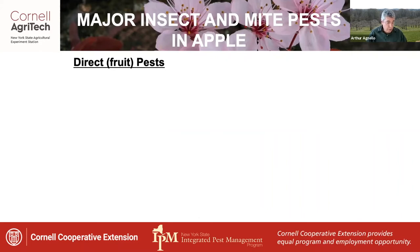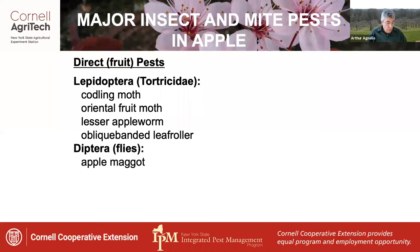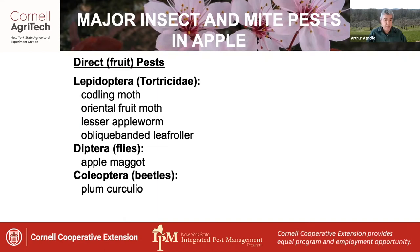In the group of direct pests which attack the fruit, we have a number of Lepidoptera — all tortricid moths, a very important family. It includes codling moth, oriental fruit moth, lesser apple worm, and oblique-banded leaf roller. One key pest is a fly in the order Diptera — that's the apple maggot — and there's at least one beetle in the Coleoptera, and that's plum curculio.